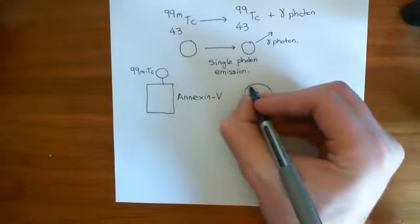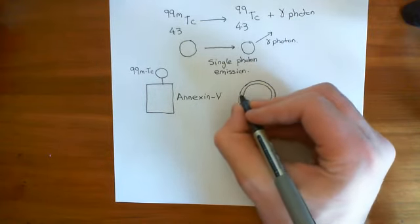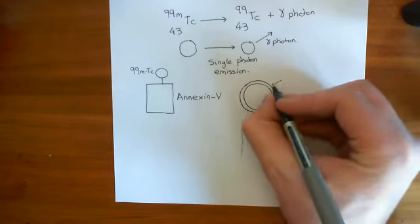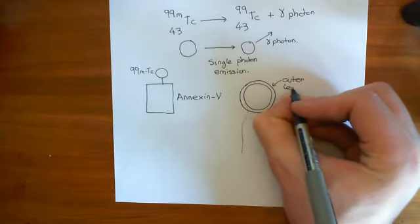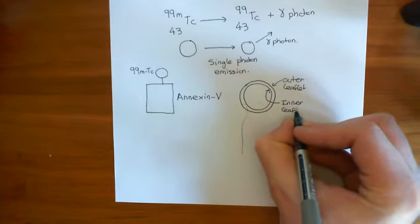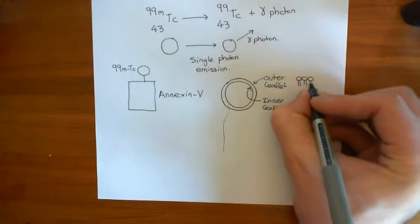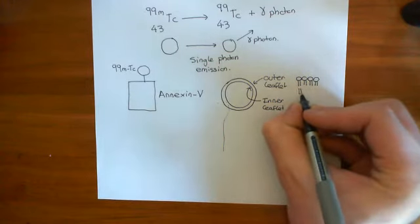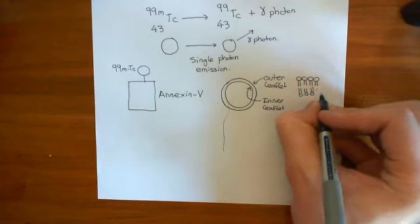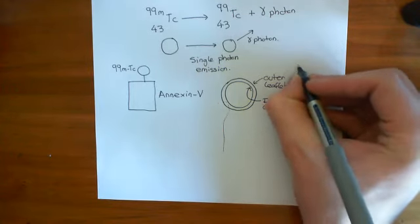Actually, let's first have it not undergoing apoptosis. I'm going to draw two lines here to demonstrate the two leaflets of the phospholipid bilayer. The phospholipid bilayer is made up of a double membrane — two layers of phospholipids. You have an outer leaflet and an inner leaflet. The polar heads are either facing the cytoplasm, in the case of the inner leaflet, or facing the extracellular fluid, in the case of the outer leaflet.